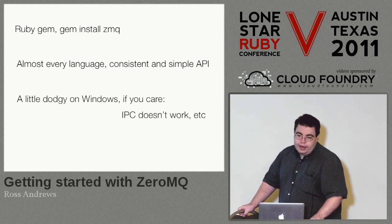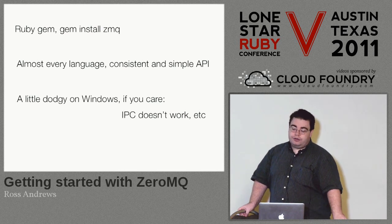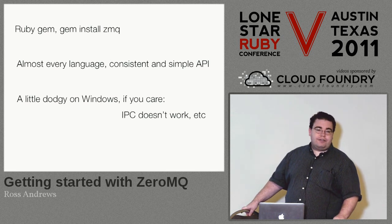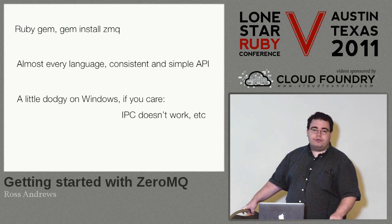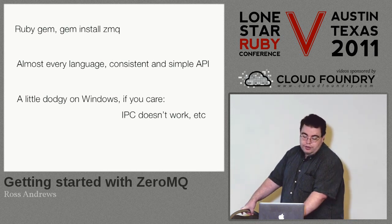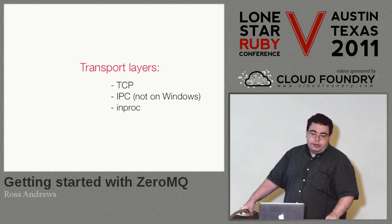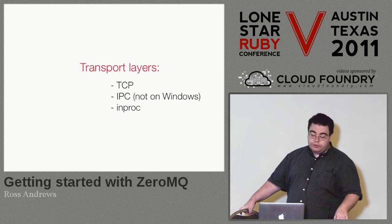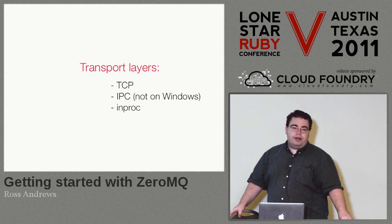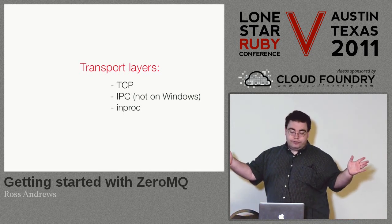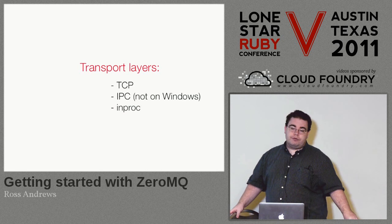The only exception — if you care, which looking out there you probably don't — is it's a little dodgy on Windows. Windows doesn't act the same way as Unix in a lot of ways, so some things just don't work the same way or just don't work at all. But the important stuff does. It works across different transport layers: you can send messages with the same interface over TCP sockets, over Unix pipes, or within the same process for threads talking to each other with an in-proc transport.